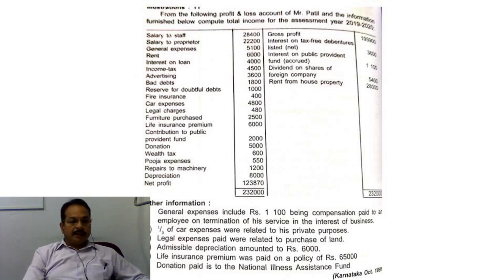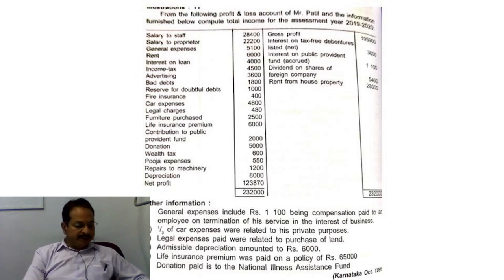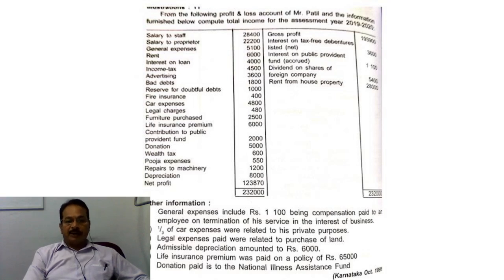Advertising is allowed. Bad debts are allowed. Reserve for doubtful debts is disallowed — 1,000.